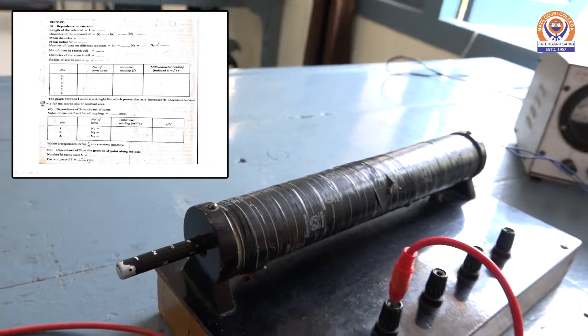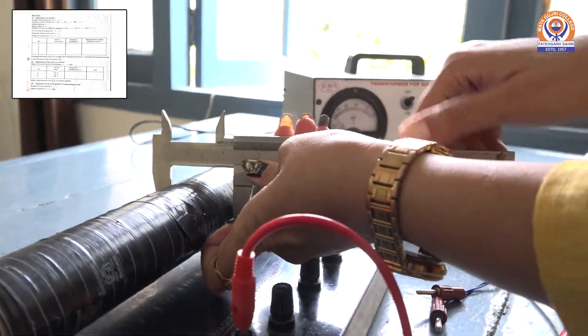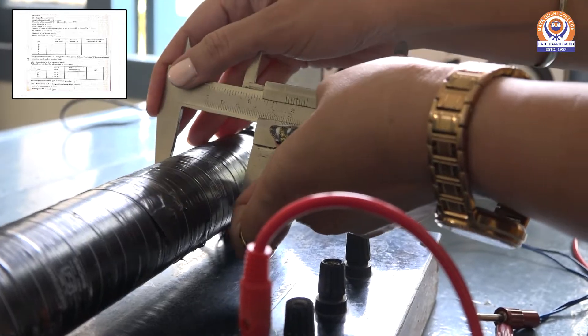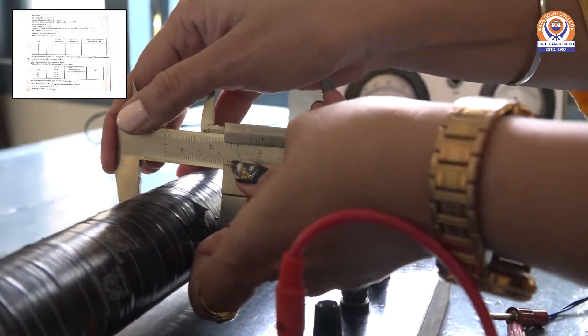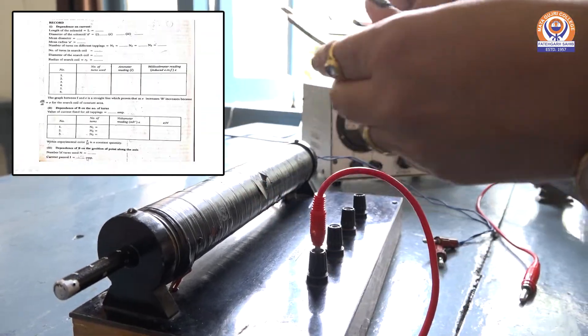And we can check the diameter of this solenoid using this vernier caliper at three different points, here, here and here. Then we will take the mean of this diameter.